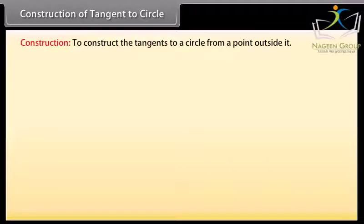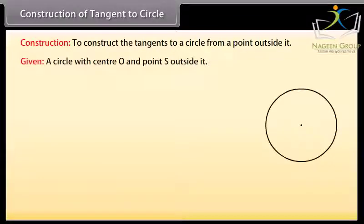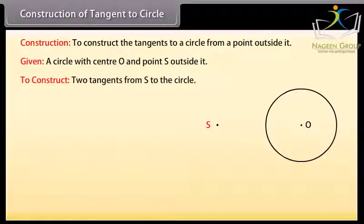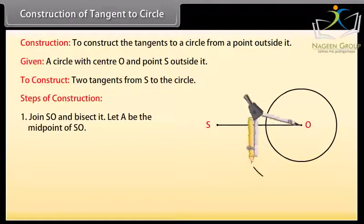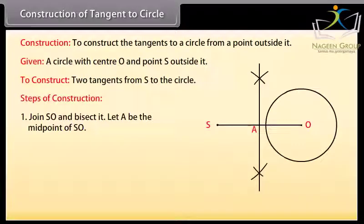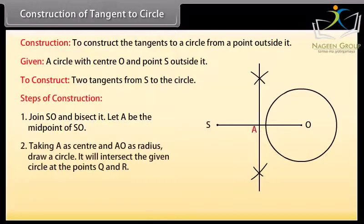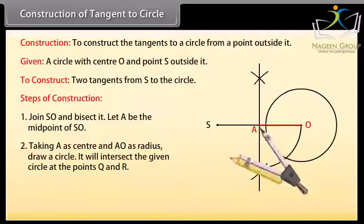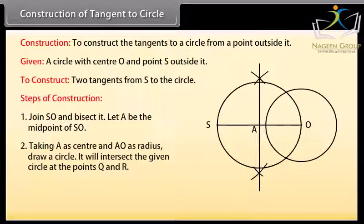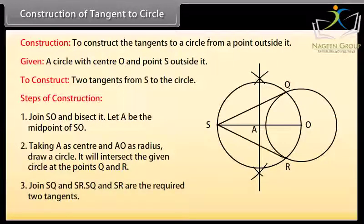Construction of tangent to a circle: To construct the tangents to a circle from a point outside it. We are given a circle with center O and a point S outside it, and we have to construct the two tangents from S to the circle. Steps of construction: Join SO and bisect it. Let A be the midpoint of SO. Taking A as center and AO as radius, draw a circle. It will intersect the given circle at the points Q and R. Join SQ and SR. SQ and SR are the required two tangents.